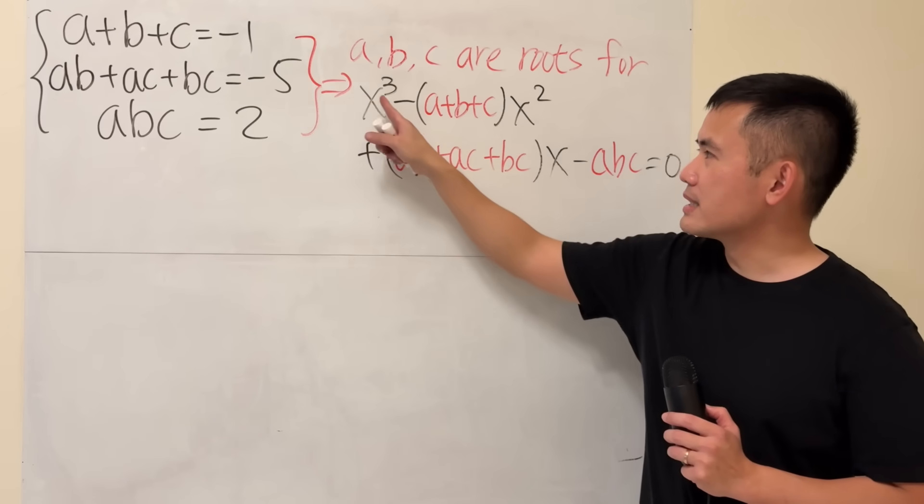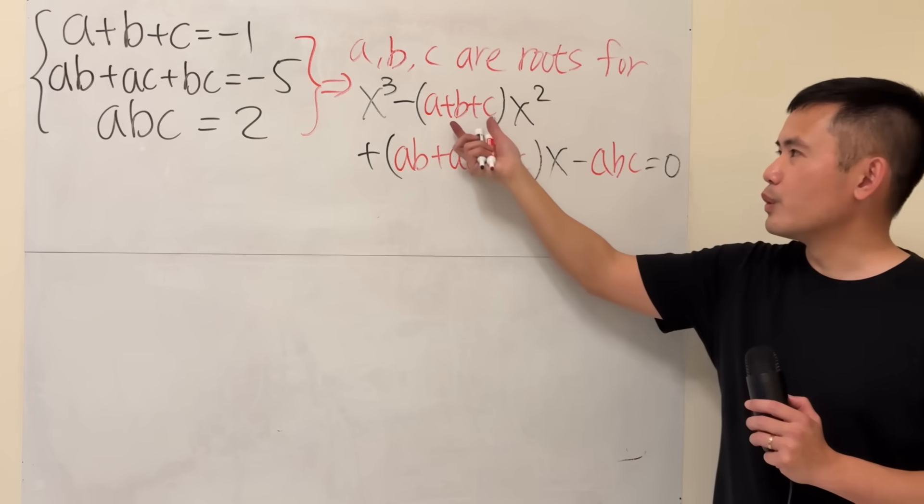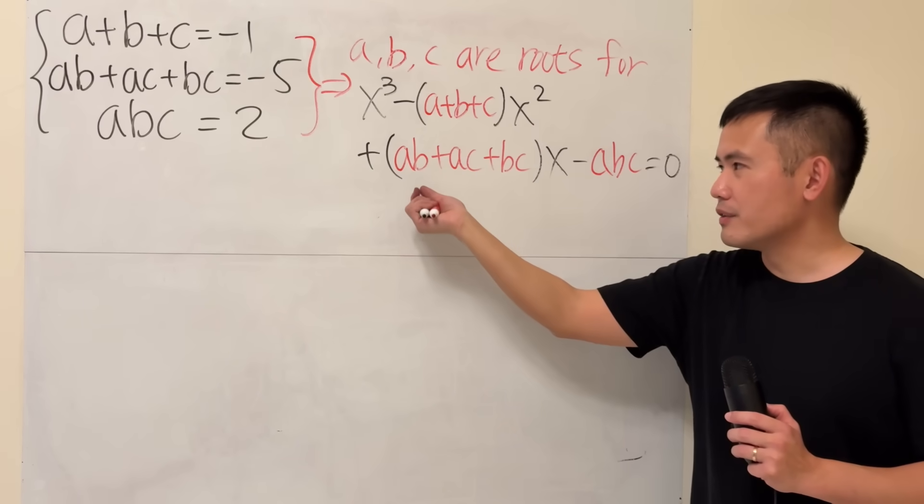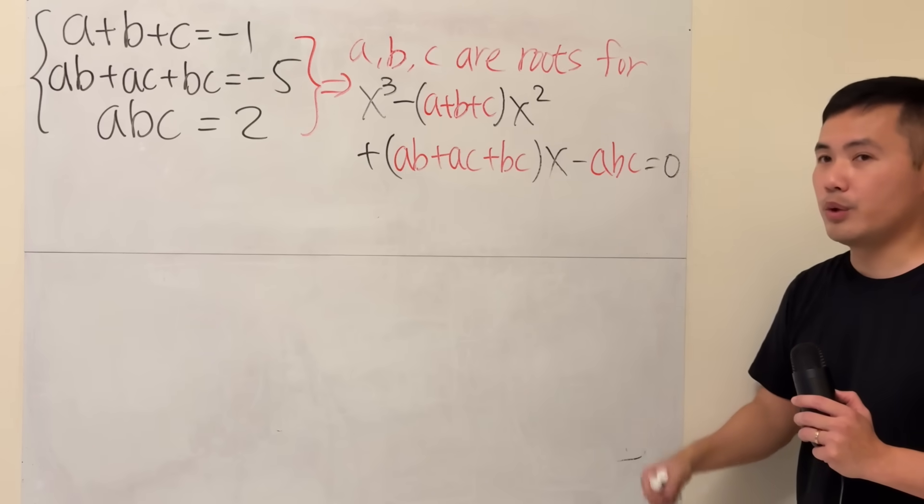So the first term is positive, and then negative, and then positive, negative. And then you start with the sum, and then the sum of the product of two letters. And then lastly, the product of all three. So that's how you can remember it.